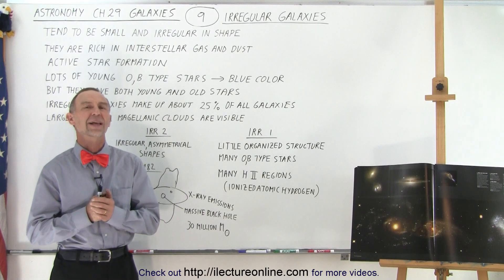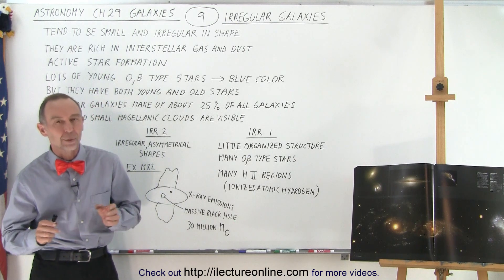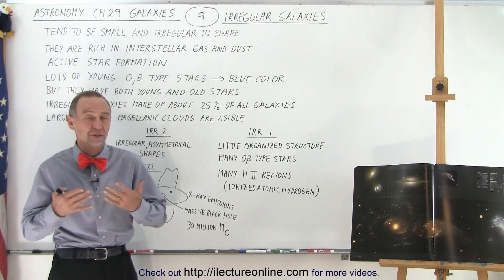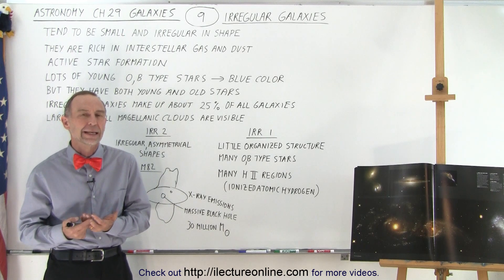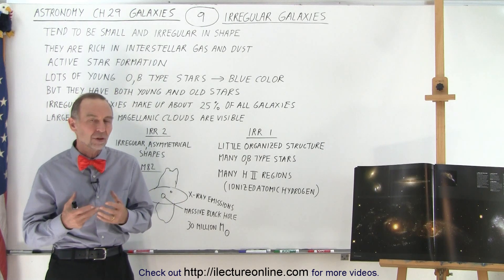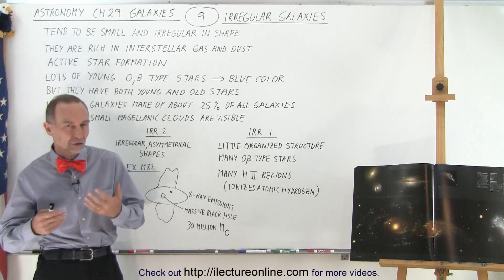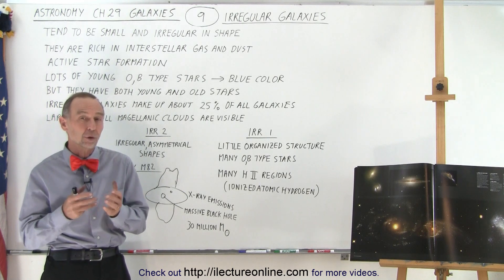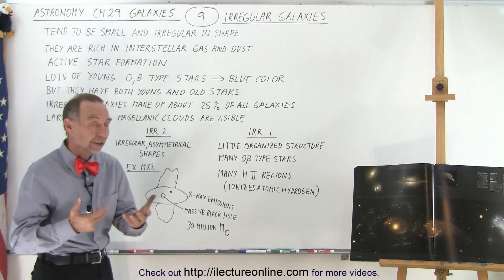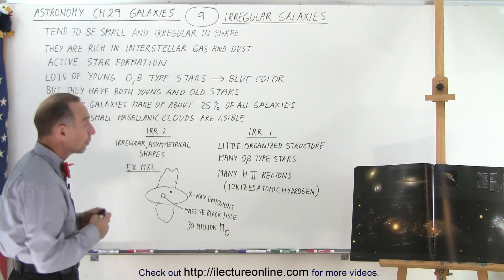Welcome to our lecture online. Now let's take a look at the third type of galaxy. We saw the elliptical galaxy, we saw the spiral galaxies, now we're taking a look at the irregular galaxies. The name indicates that they don't have a specific shape — they're irregular in shape. They tend to be small and they tend to have a lot of the gases and nebulas that you find in the spiral arms of spiral galaxies, and hence a lot of star formation still occurring.